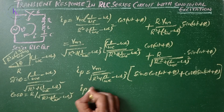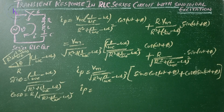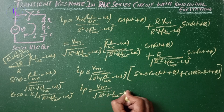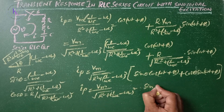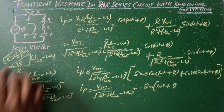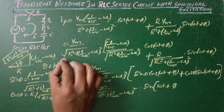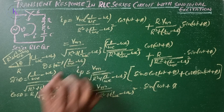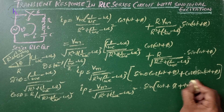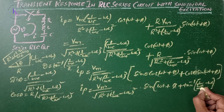Since sin θ·cos(ωt + φ) + cos θ·sin(ωt + φ) = sin(ωt + φ + θ), the particular solution simplifies to: ip = Vm / √[R² + (1/(ωC) − ωL)²] · sin(ωt + φ + θ), where θ = tan⁻¹[(1/(ωC) − ωL) / R].